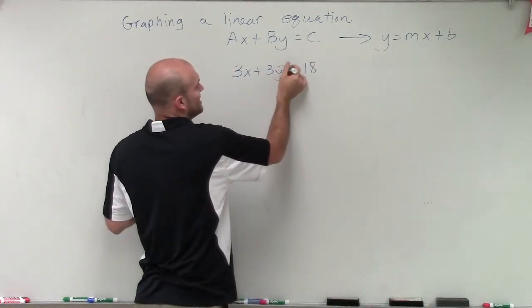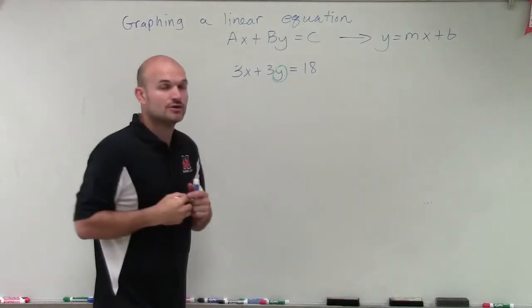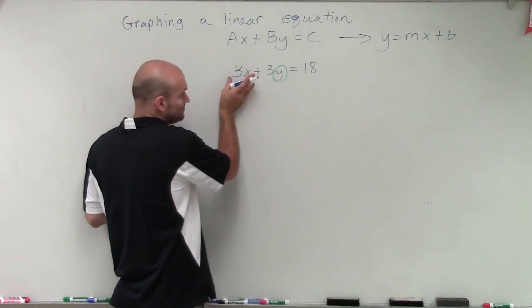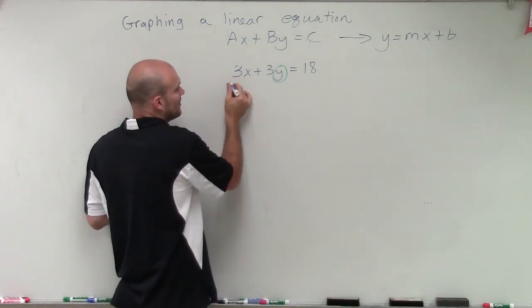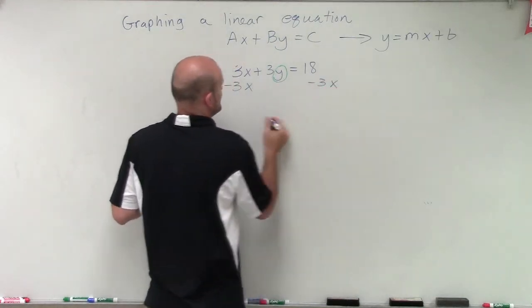So remember, we're trying to isolate our y-values. The first thing I need to do is undo addition and subtraction. We see that my y is being added by 3x, so I need to subtract 3x to the other side.